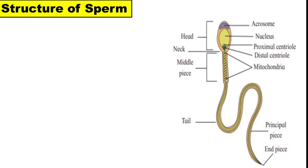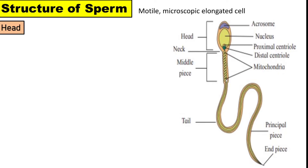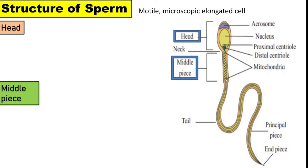Let's talk about the structure of sperm. It is a motile, microscopic, elongated cell. It is divisible into three parts: head, middle piece, and a tail.